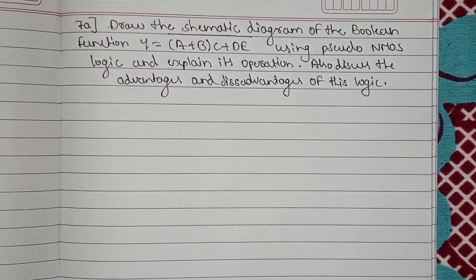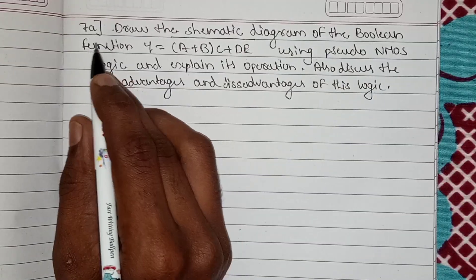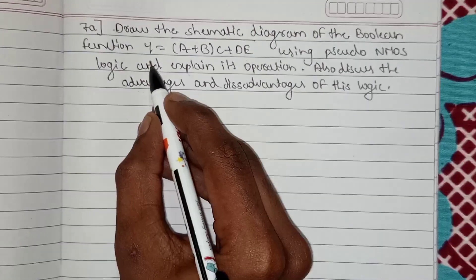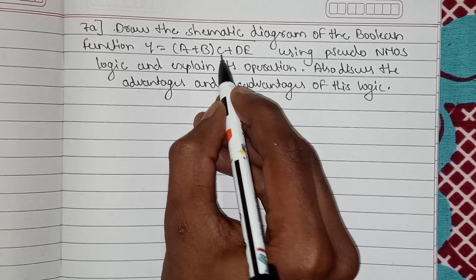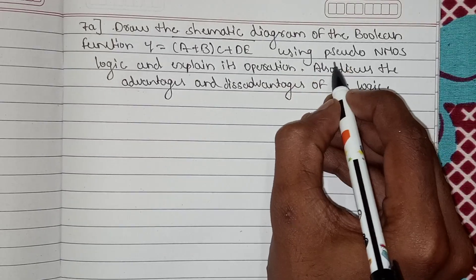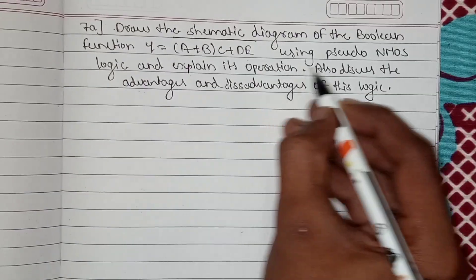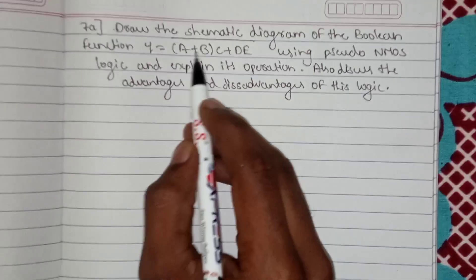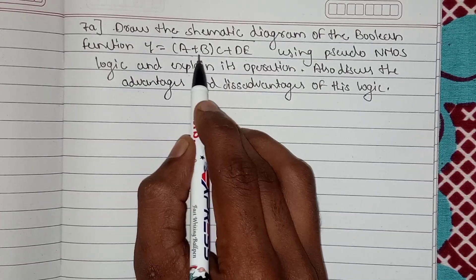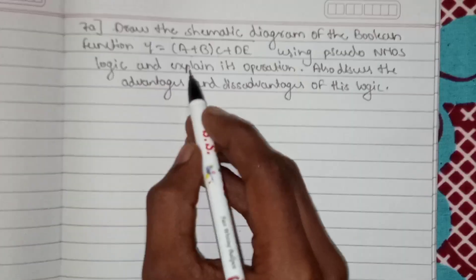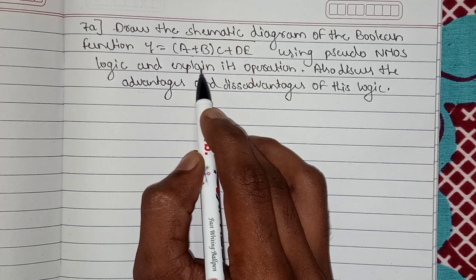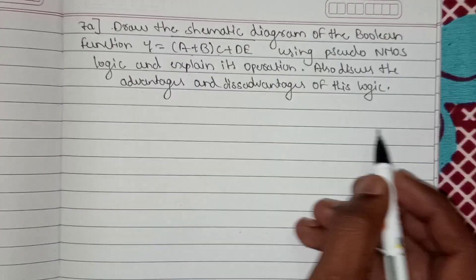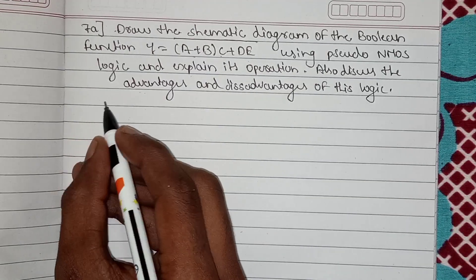Hello everyone, welcome back to Mission YouTube channel. In this video we are solving the model question paper of 6th semester VLSI Design and Testing — Module 4, question 7a: draw the schematic diagram of the boolean function Y = (A + B(C + D)E)̄ using pseudo NMOS logic and explain its operations, also discuss the advantages and disadvantages of this logic.